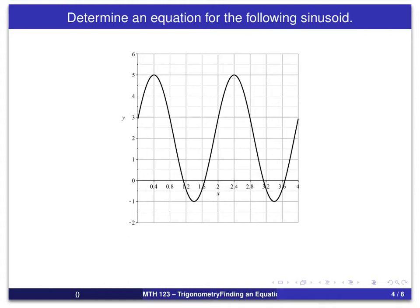Okay, so here we go. The first high point that we see right there, again using the grid that we have, we can see that the coordinates for that point are 0.4, 5.